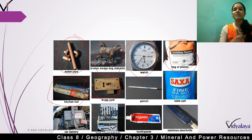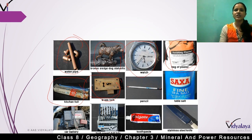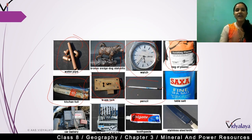Why are minerals important for us? These minerals are removed from their ore in raw form, then refined, and finally made into different objects. For example, the pencil you write with uses graphite, which is another type of mineral.